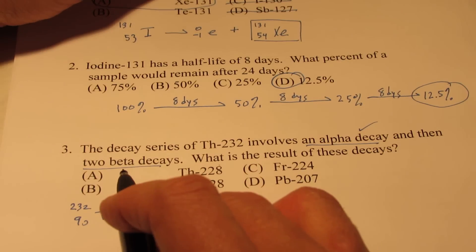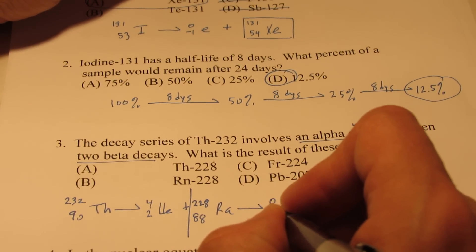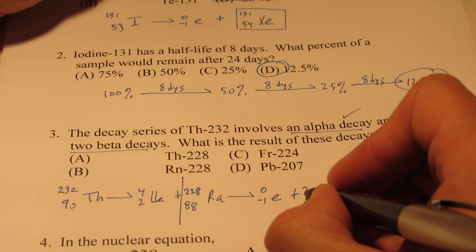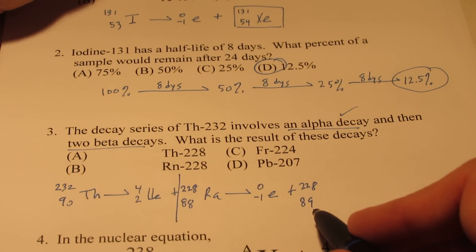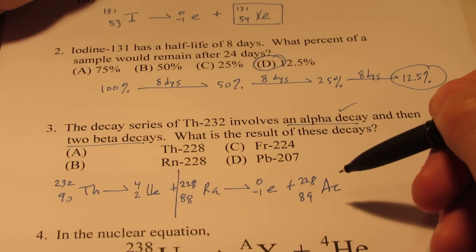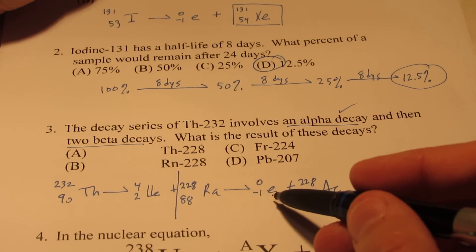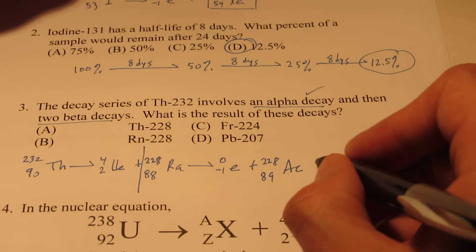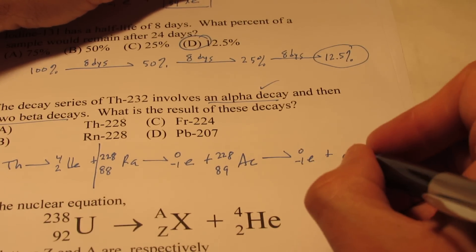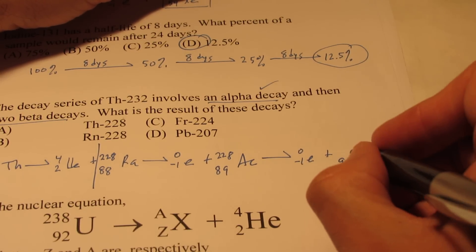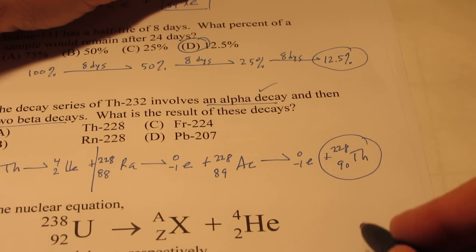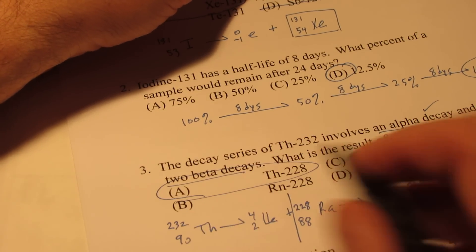So now we have two beta decays. So that would have an atomic number of 89 and a mass of 228 still. Atomic number 89 is actinium. So that's after my first beta decay. But this says two beta decays. So now this has to go through one more beta decay. And so we'd end up with an atomic number of 90, which is the element thorium again, and the mass would be 228. So I'm going to look for thorium-228 as my answer. And it looks like letter A would be correct.